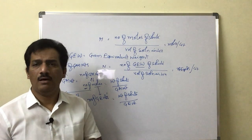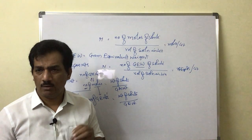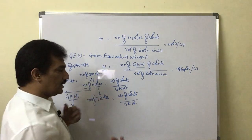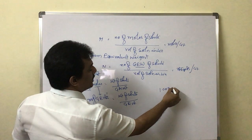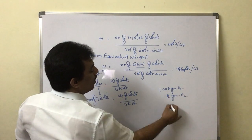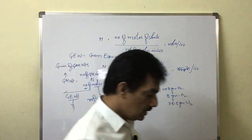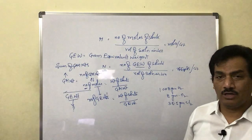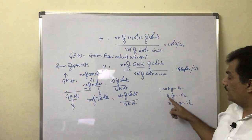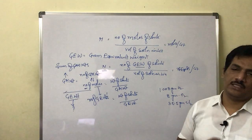Equivalent weight is nothing but the weight of any substance that can react or replace 1.008 grams of hydrogen, or 8 grams of oxygen, or 35.5 grams of chlorine. This is known as its equivalent weight.